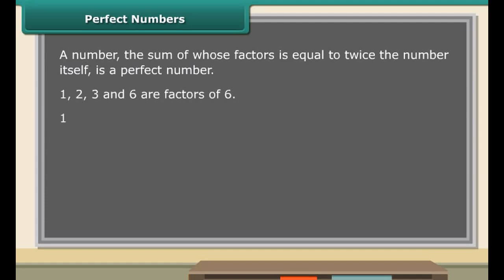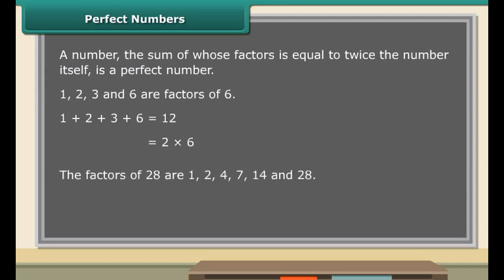A number whose sum of factors is equal to twice the number itself is called a perfect number. For example, 1, 2, 3, and 6 are factors of 6. The sum of the factors 1, 2, 3, and 6 is 12, which is the same as 2 times 6. Hence, 6 is a perfect number.